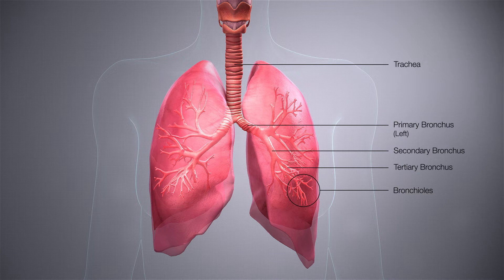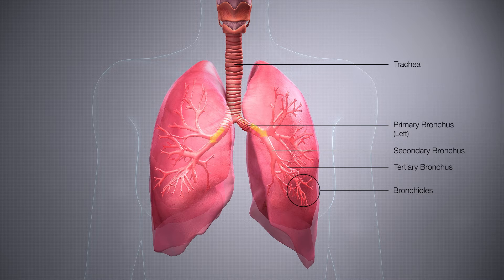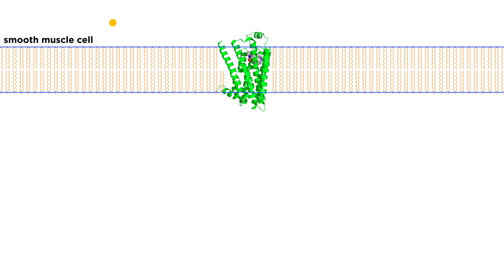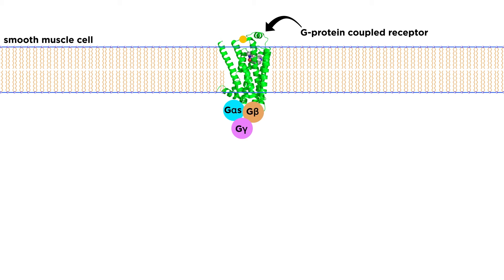After inhalation of a beta-2 adrenoceptor agonist, the drug will travel down the airways and pass through the cells lining the bronchus. It will then bind to the receptor located on the surface of smooth muscle cells. The beta-2 adrenergic receptor is a G-protein coupled receptor, and signals through the G-alpha-S pathway.